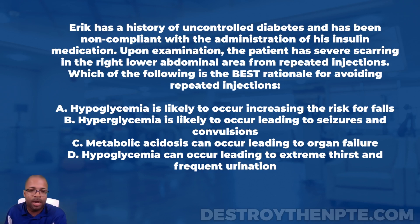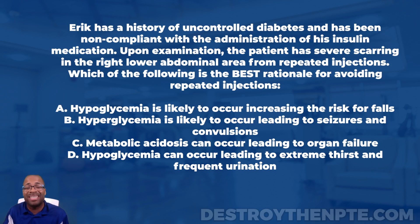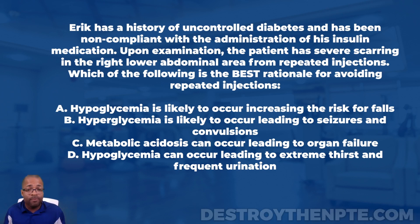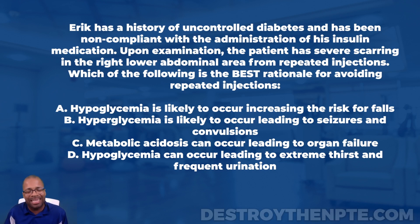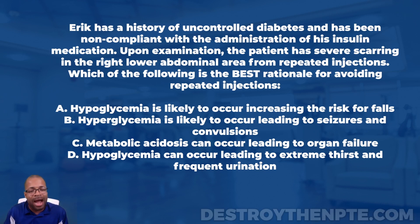For this week's clinical file, we have Eric. Eric has a history of uncontrolled diabetes and has been non-compliant with the administration of his insulin medication. Upon examination, the patient has severe scarring in the right lower abdominal area from repeated injections. Which of the following is the best rationale for avoiding repeated injections? A: hypoglycemia is likely to occur increasing the risk for falls. B: hyperglycemia is likely to occur leading to seizures and convulsions. C: metabolic acidosis can occur leading to organ failure.